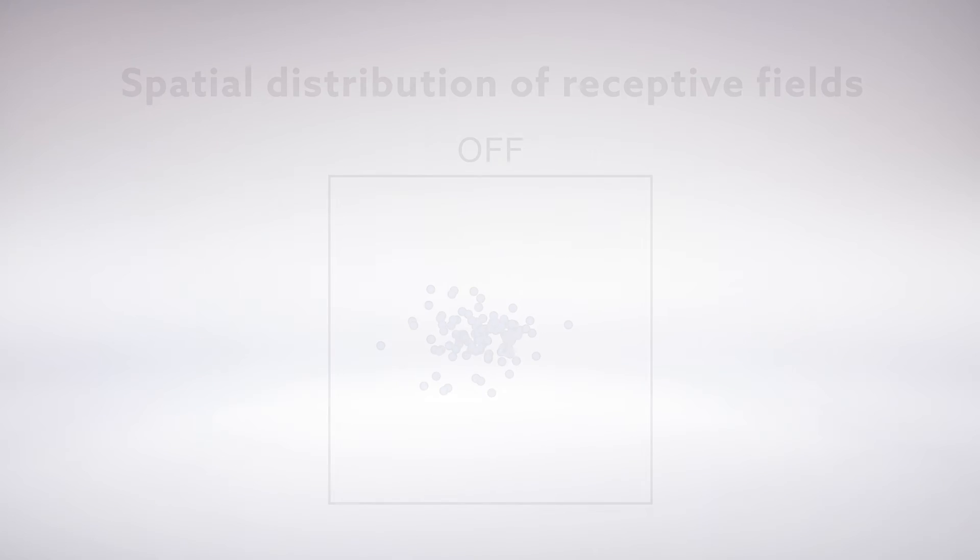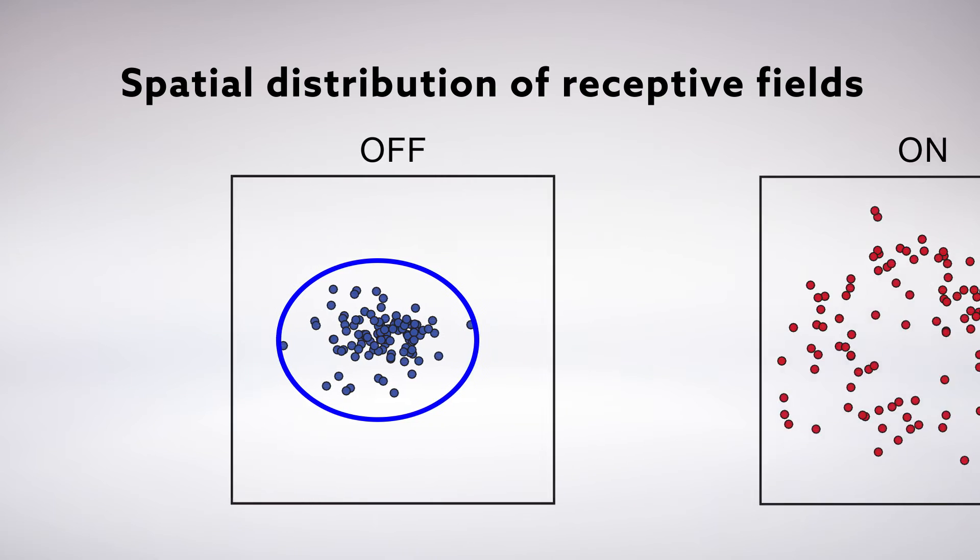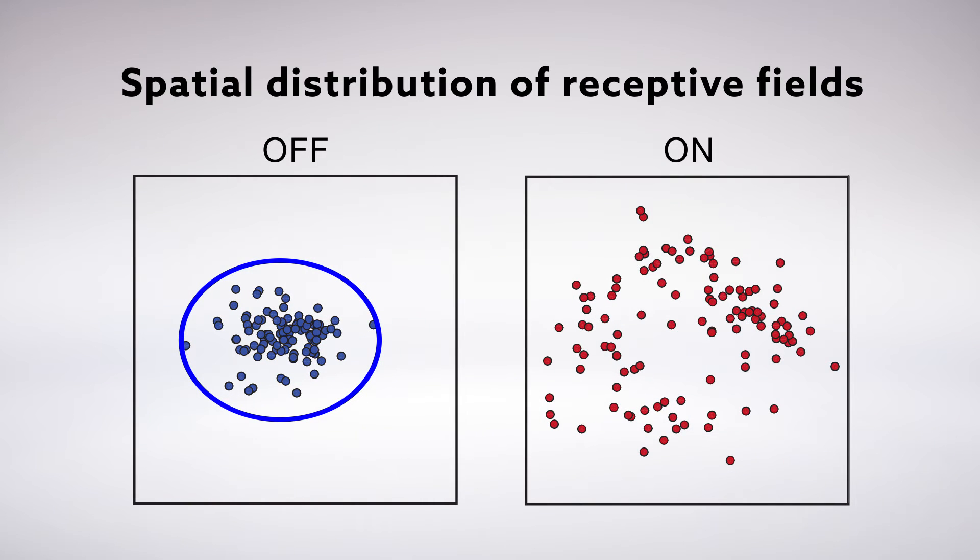They found the off responses were extremely precise, restricted to small regions of visual space and reflecting the known map of location. The on responses, however, appeared jumbled, spread out over a larger region of visual space.